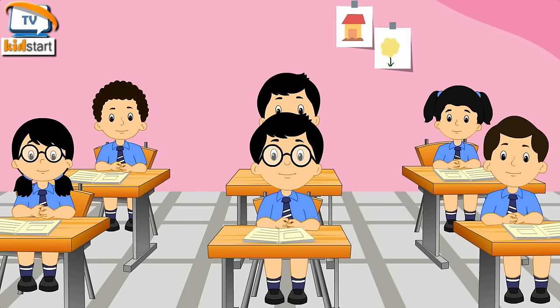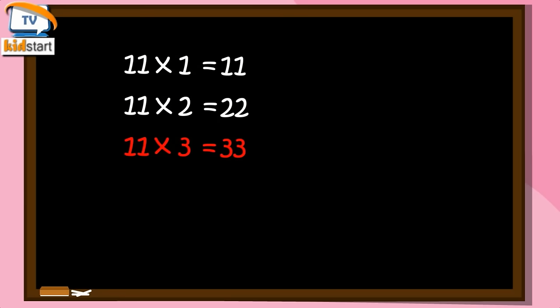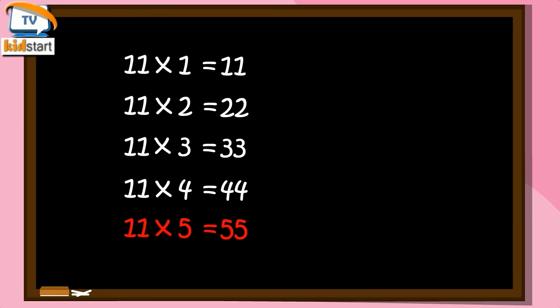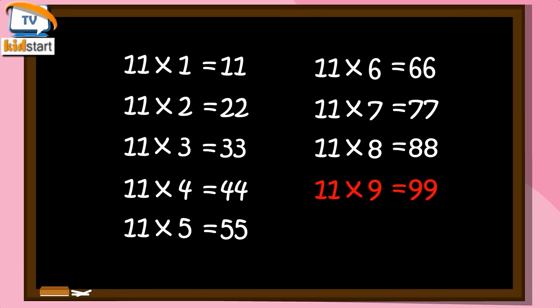Eleven ones are eleven. Eleven twos are twenty-two. Eleven threes are thirty-three. Eleven fours are forty-four. Eleven fives are fifty-five. Eleven sixes are sixty-six. Eleven sevens are seventy-seven. Eleven eights are eighty-eight. Eleven nines are ninety-nine. Eleven tens are one hundred and ten.